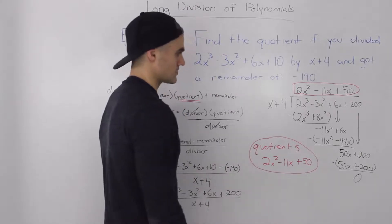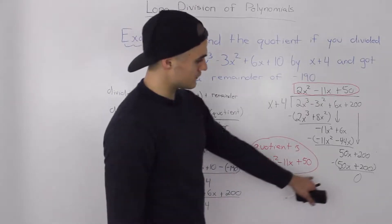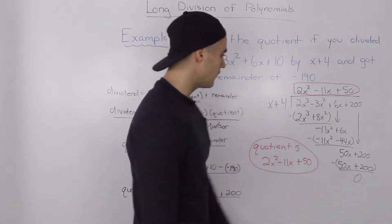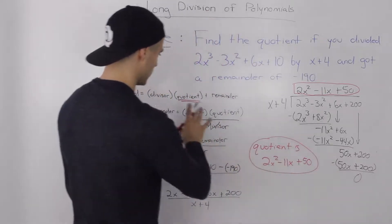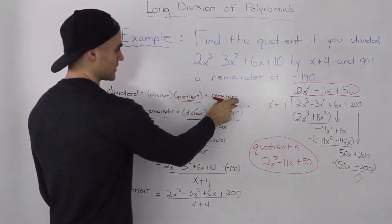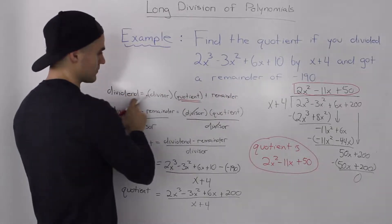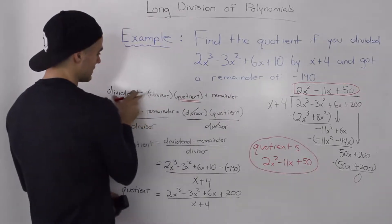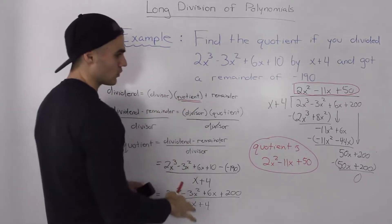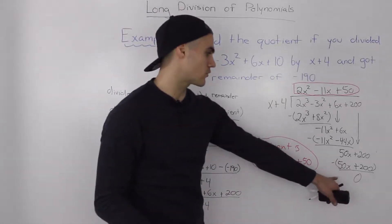Now a couple of things I want to make a note on. First off, notice how we got a remainder of 0 here. And that will always happen when you are solving for either the divisor or the quotient. Because what happens is we subtract the remainder from the dividend and then the dividend is going to divide evenly by either the divisor or the quotient. So it makes sense that we get a remainder of 0.